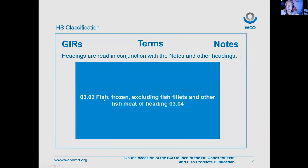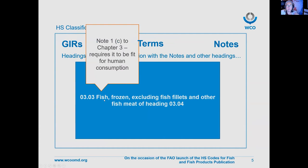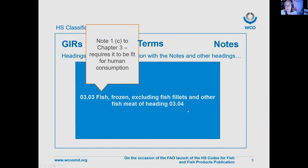For example, there is a note that requires the fish to be fit for human consumption. We have another heading whose terms we have to check out to find out what it does not include — in this case, it does not include fillets or fish meat, whether or not minced, that are included in the terms of heading 0304.